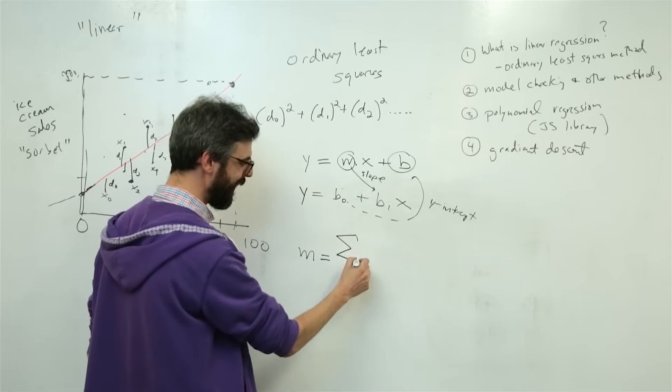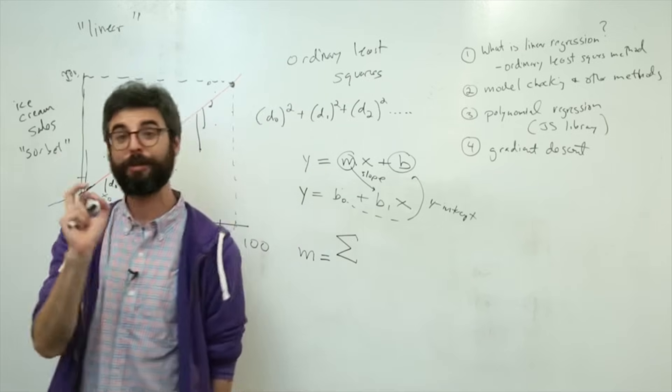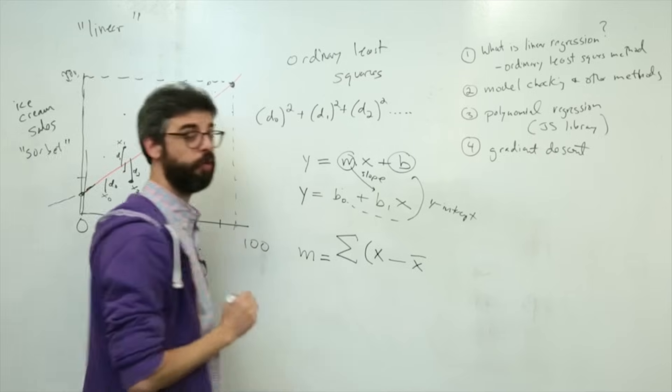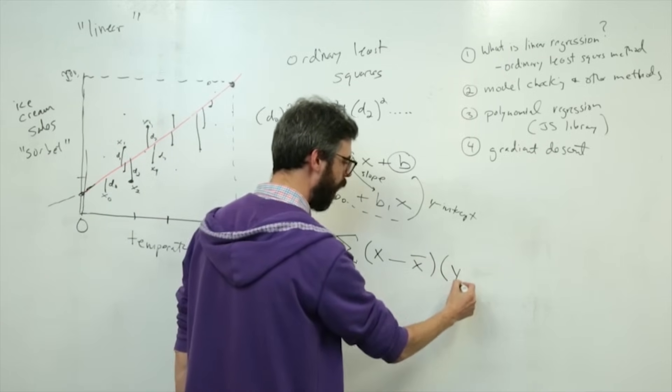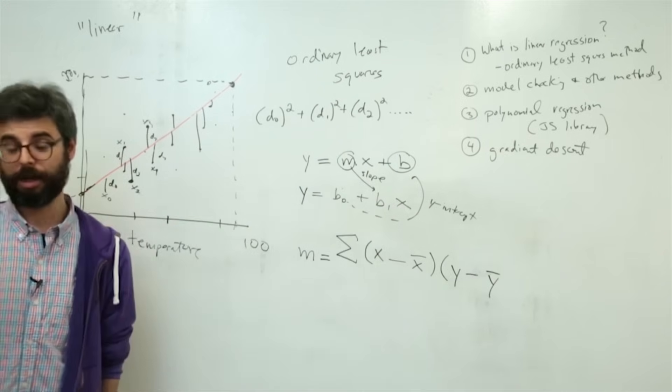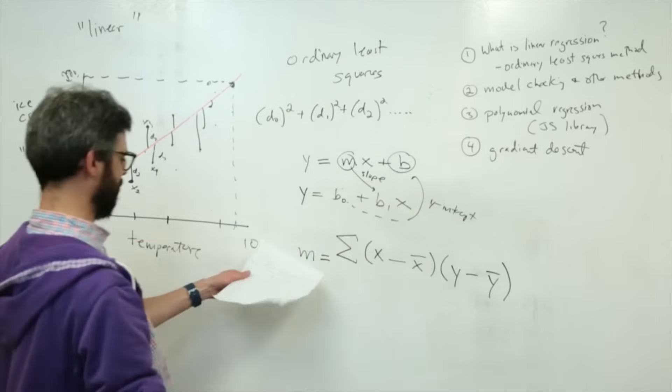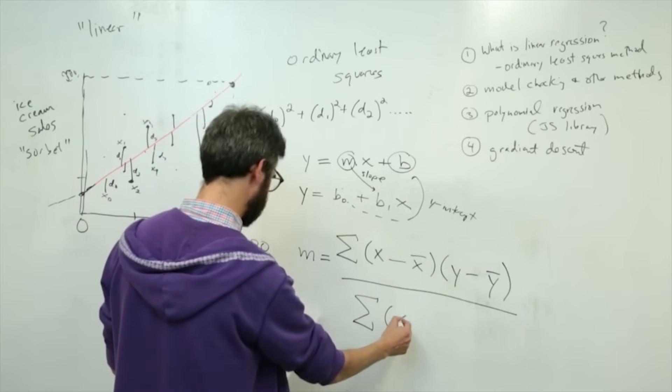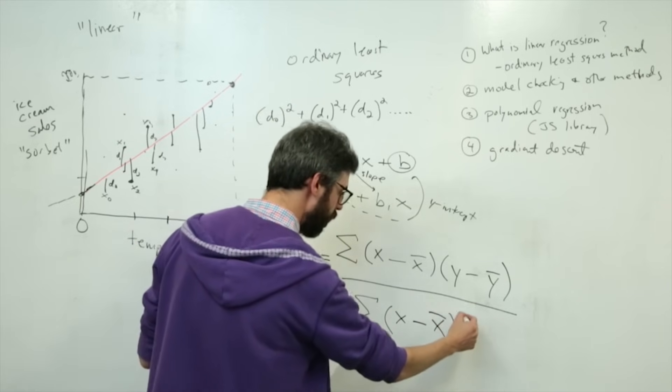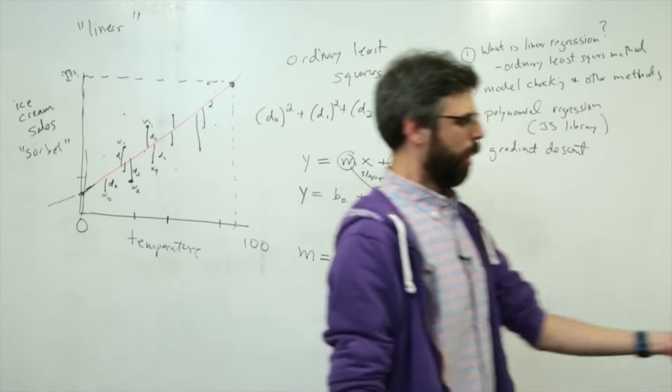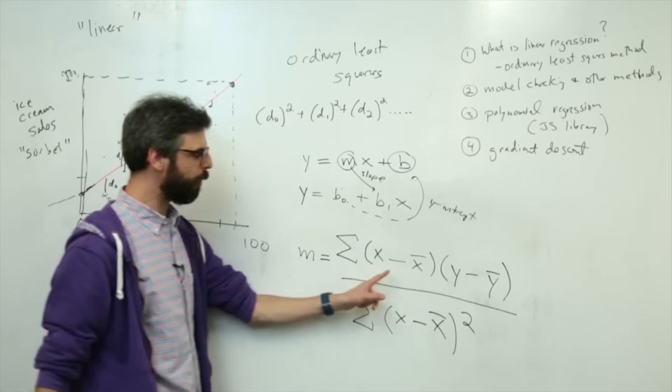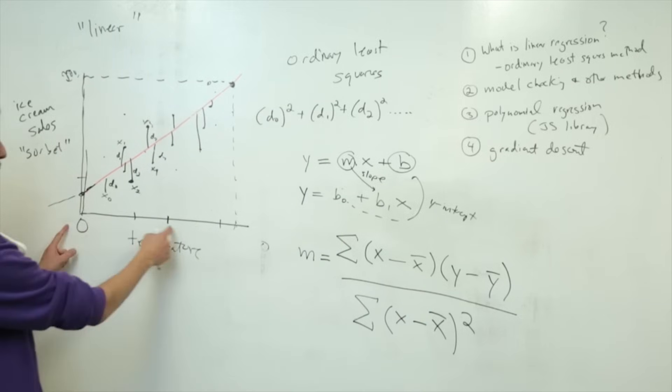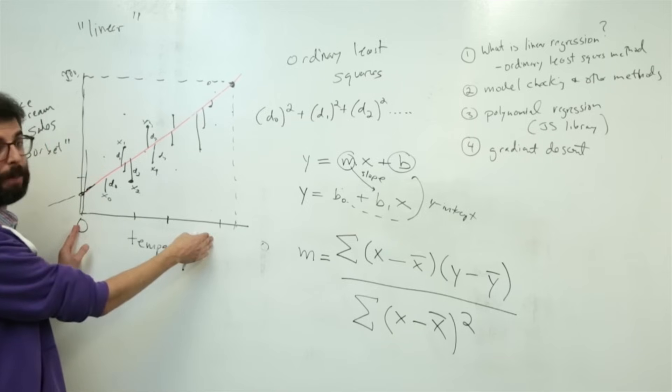We calculate it as the sum, so I'm going to use this Greek letter sigma, it looks like an E but it's not an E, it's a sigma, which means sum of x minus x with a line over it, and I'll talk about what that means, times y minus y with a line over it. You could call that y bar, I suppose. Divided by the sum of x minus x with a bar squared.